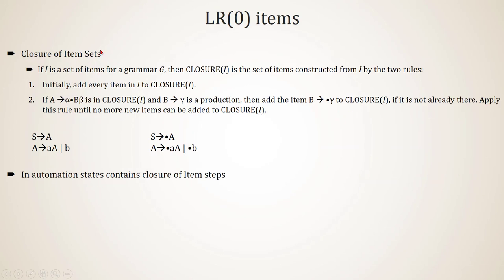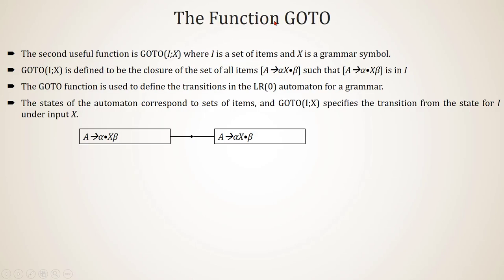Items in each state are generated with the help of the closure function, and transitions between states are defined by the goto function. The closure and goto functions will become much clearer when we look at the example.